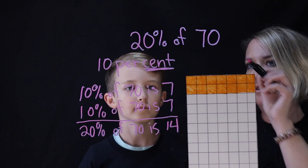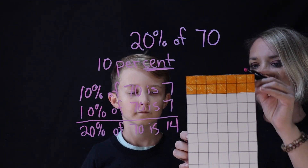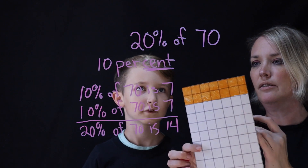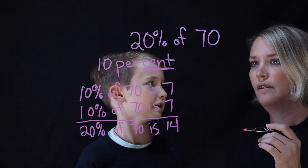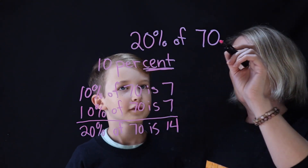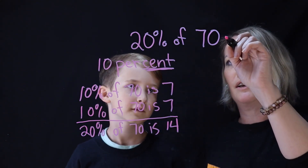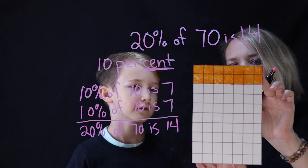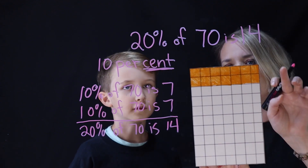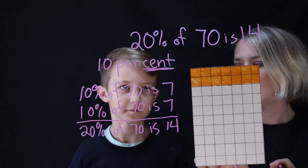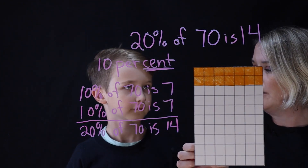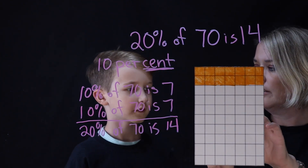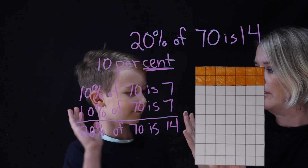So what's our final answer here, Louie? 14. So 20% of 70 is 14, and you can just see it with these orange ones here. That was amazing, Louie. Thank you. High five.